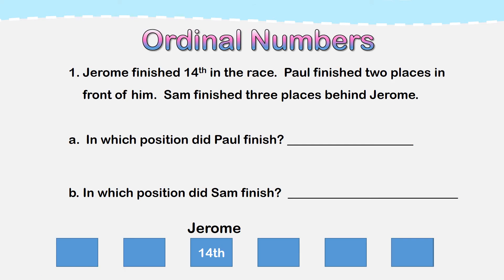Read with me. Jerome finished 14th in the race. Paul finished two places in front of him. Sam finished three places behind Jerome. A: In which position did Paul finish? B: In which position did Sam finish? First, I must ask myself: what is this problem asking me to do? This problem is asking me to write the position of Paul and then the position of Sam.